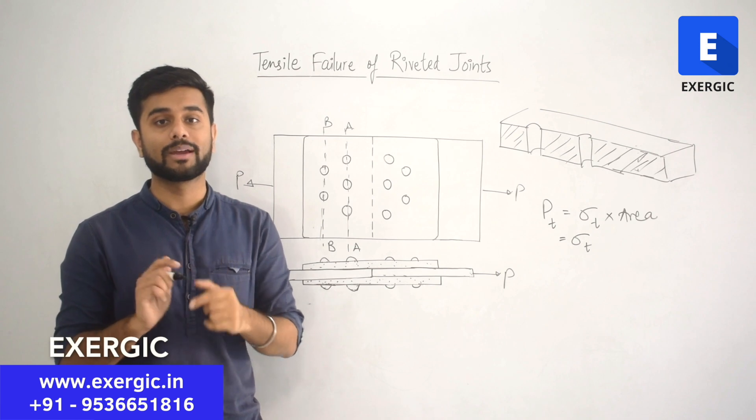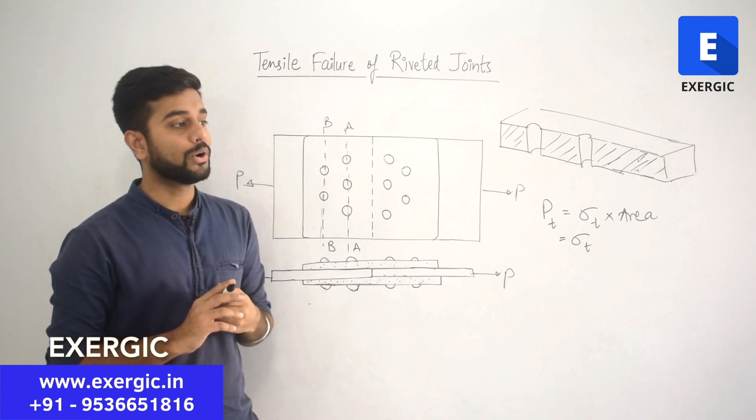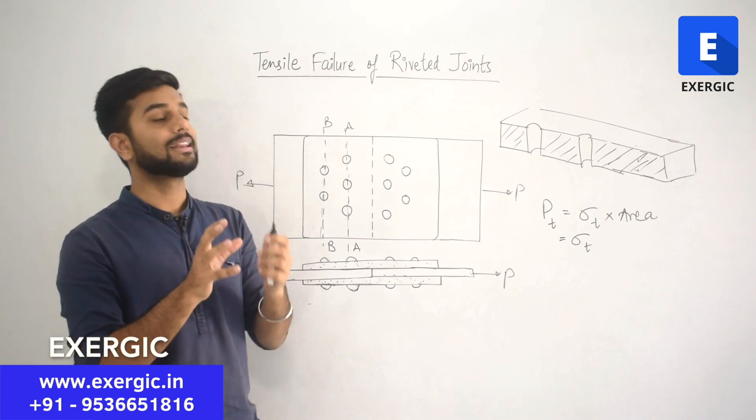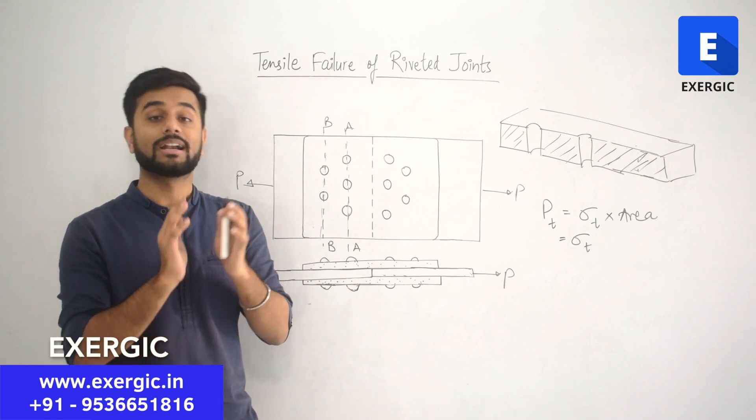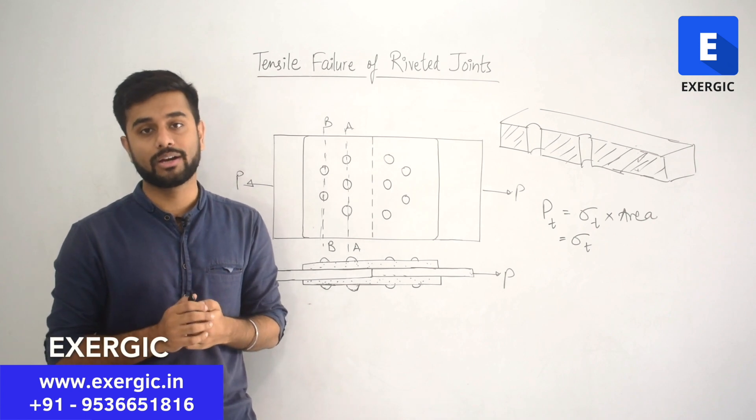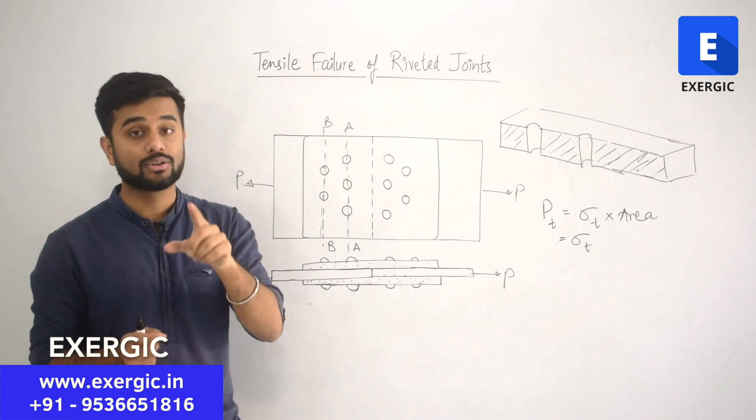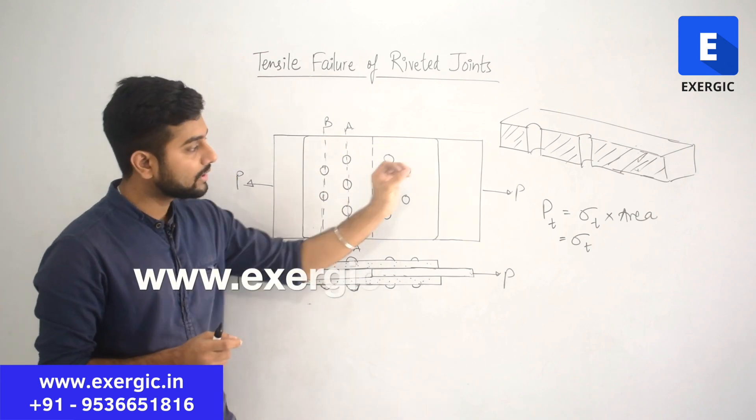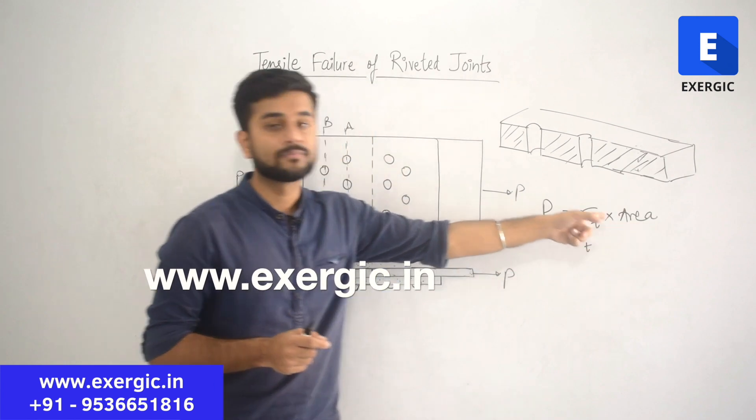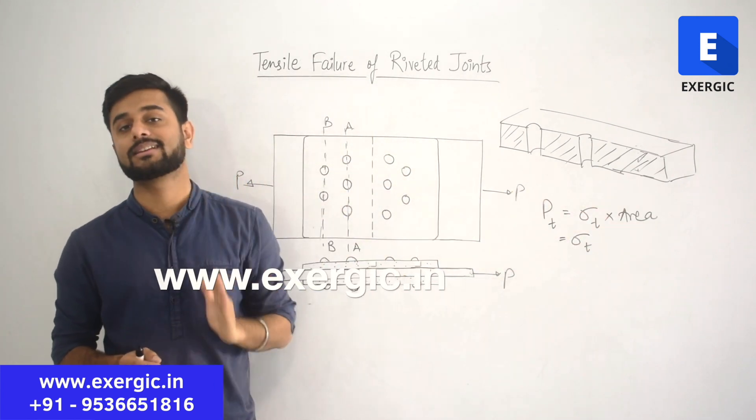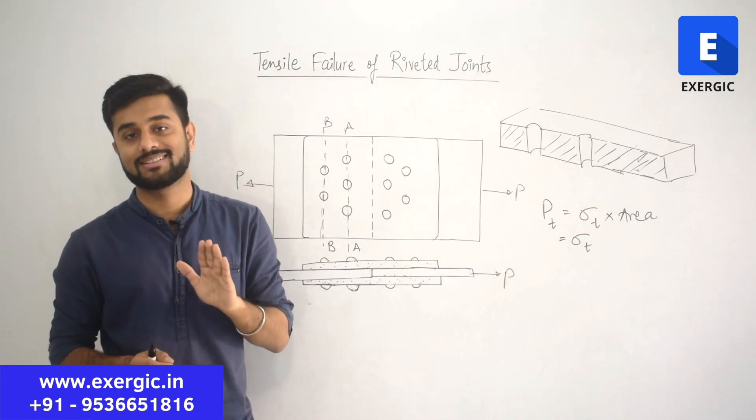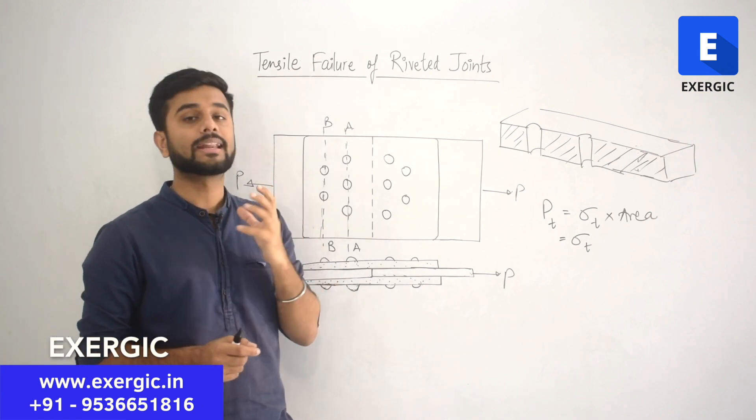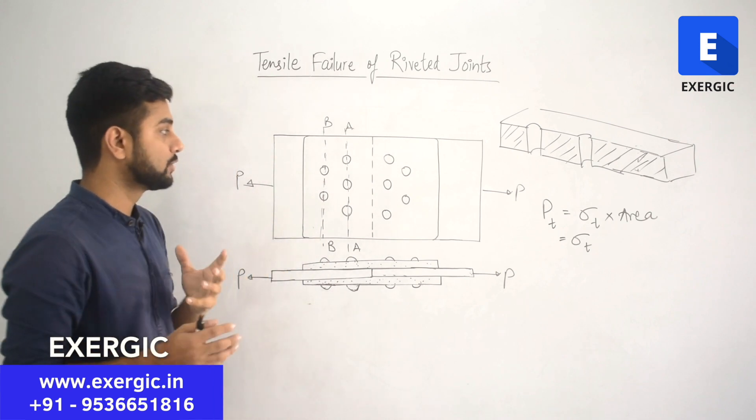Which one will you pick? Now, what you will say that sir, from the point of view of design, you have told that always consider the lesser value of strength, always underestimate the strength of the component. So, since the tensile strength of the plate will be less along AA, we are going to consider the area of the plate along the section AA. This will be your answer but this is incorrect answer. Why? Let's have a look. It's a very interesting case which can be asked to you in gate.